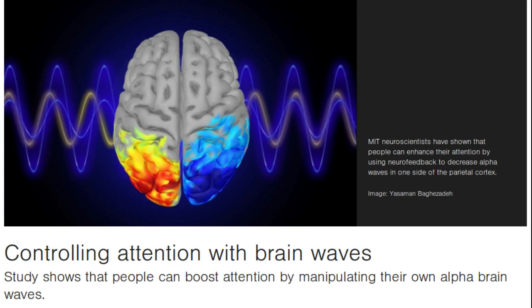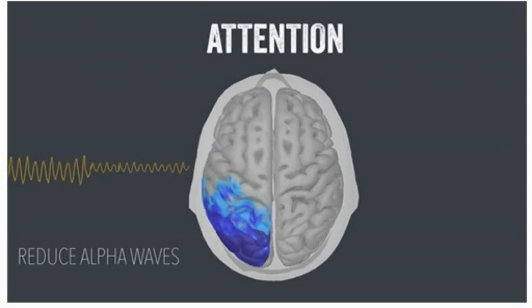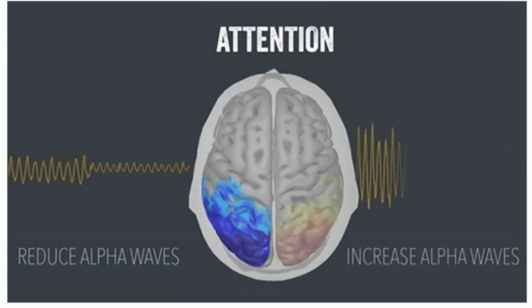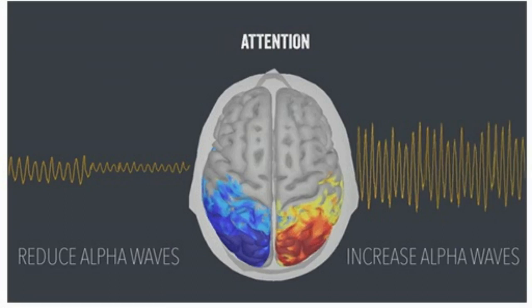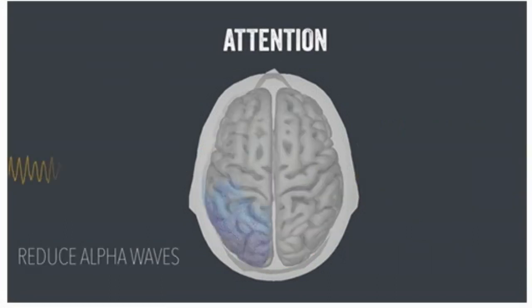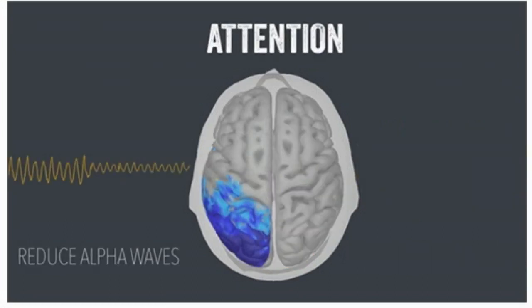The study found that when subjects learned to suppress alpha waves in one hemisphere of their parietal cortex, they were able to pay better attention to objects that appeared on the opposite side of their visual field.